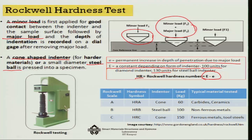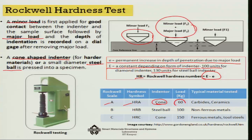There are three scales of Rockwell hardness. Scale A, known as HRA, uses a cone-shaped indenter with a load of 60 kg and is used for carbides and ceramics — mostly for ceramic-type systems.